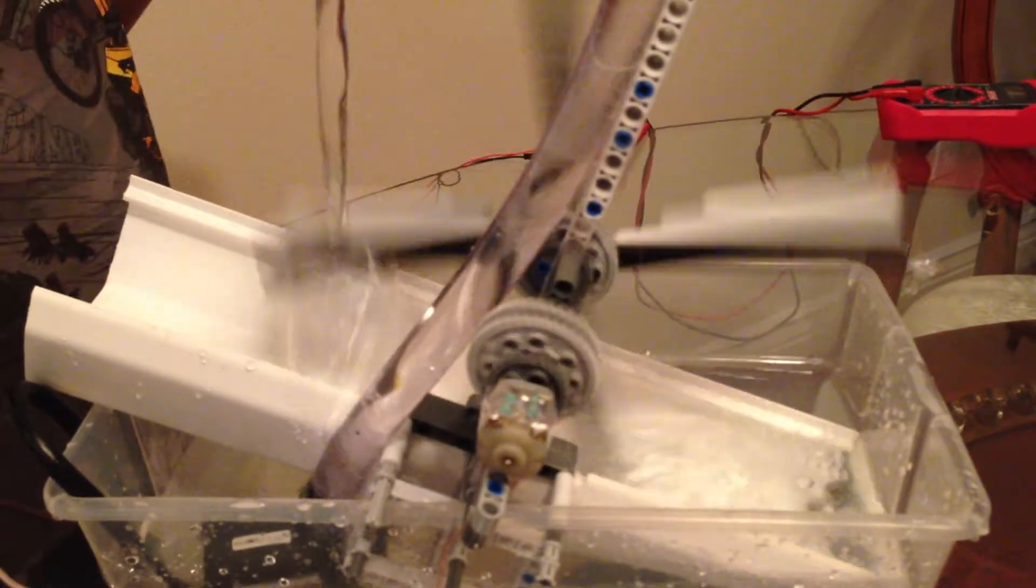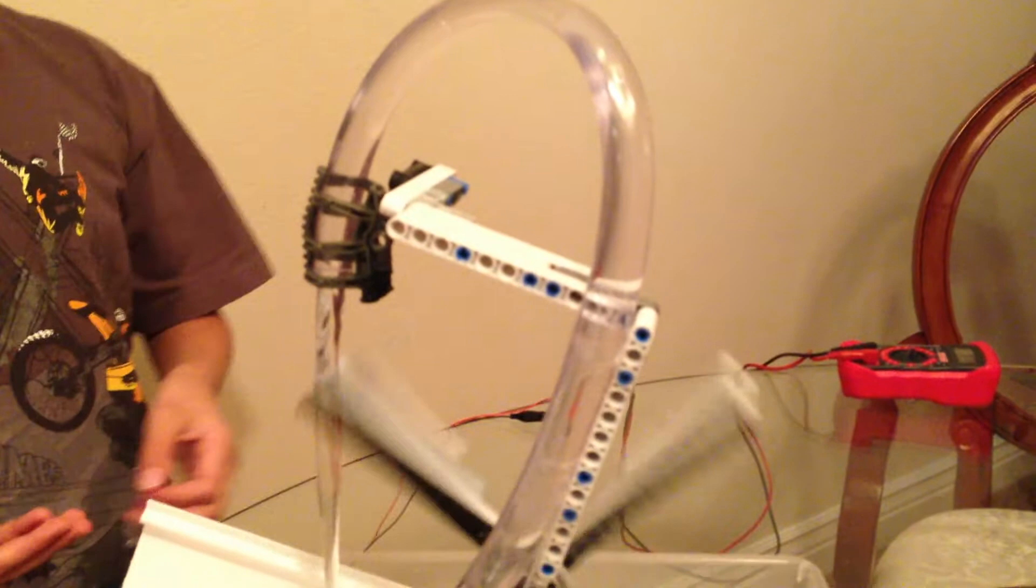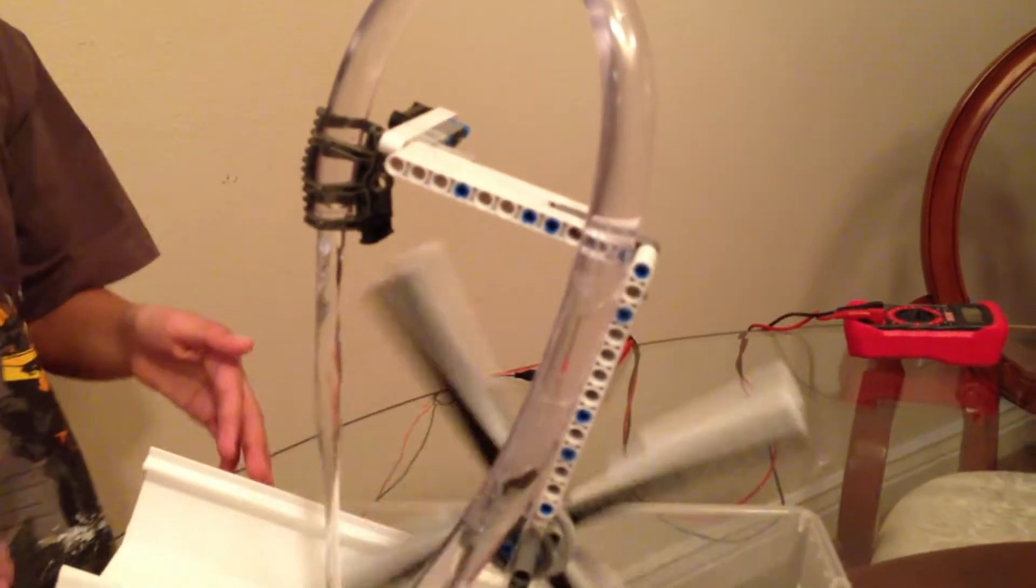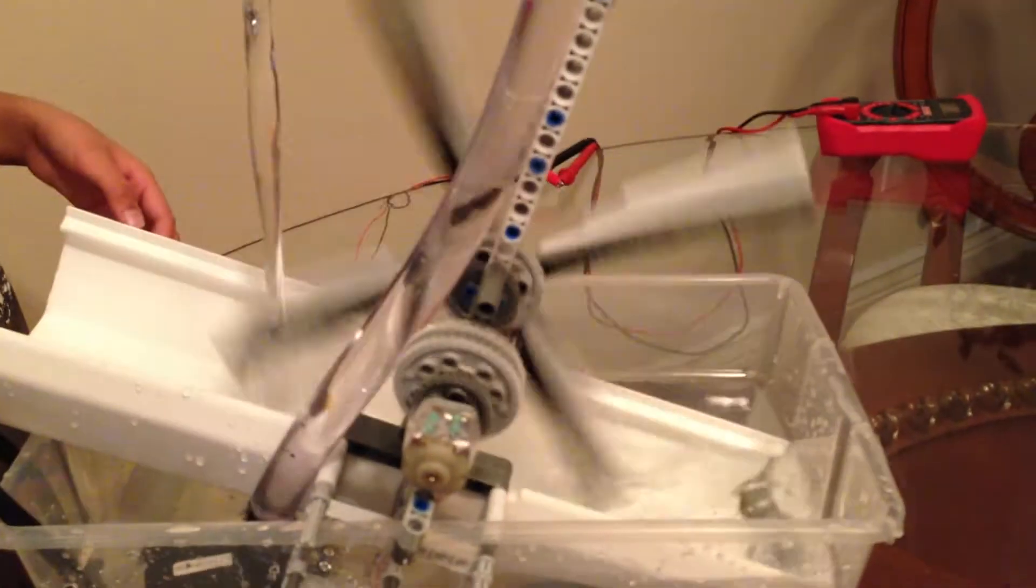In real life, instead of having this long pipe to drop the water, there would actually be a river. But since I couldn't bring a river for this model, I just used a fountain pump and a pipe.